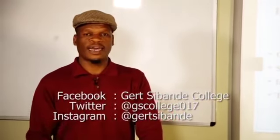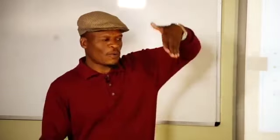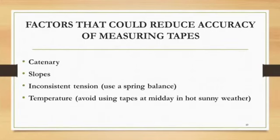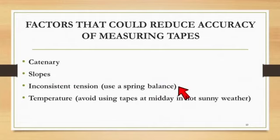There are simple factors that can affect tape measure readings. First is catenary, where the tape sags between two points. Second, avoid measuring on a slope — always use a flat horizontal plane. Third, maintain consistent tension and don't pull the tape too much. Finally, never use a tape measure at very high temperatures, as it will tend to stretch.